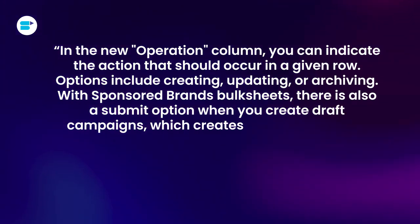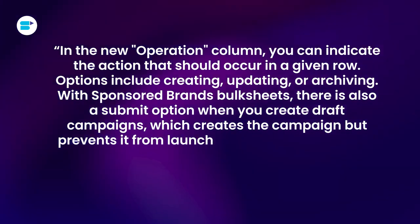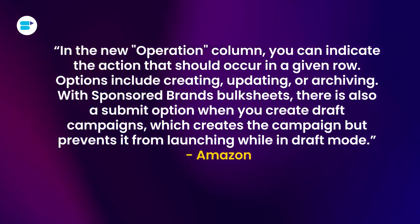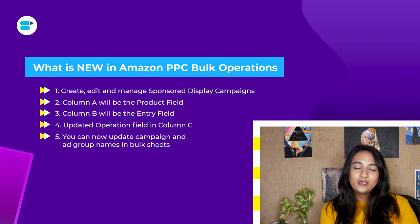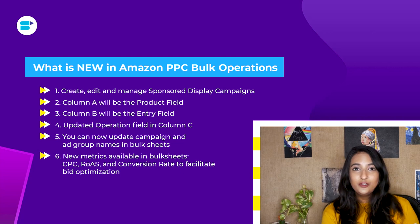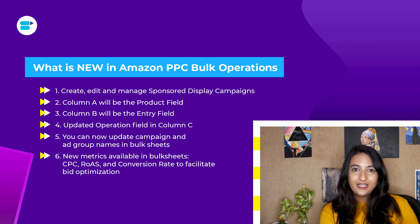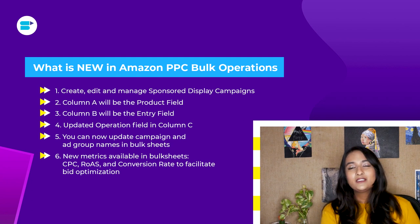With sponsored brand's bulk sheet, there is also an option to submit when you create a draft campaign, which creates the campaign but prevents it from launching while in draft mode. The fifth update is that you can now update campaign and ad group names in your bulk sheets, letting you reuse your bulk sheet and update names more effectively. Sixth, there are new metrics for you to see in your Amazon bulk sheets, including CPC (cost per click), ROAS, and conversion rate, which helps you optimize your bids more effectively.